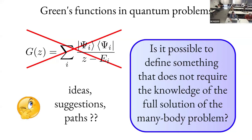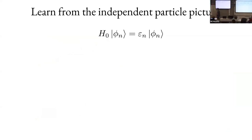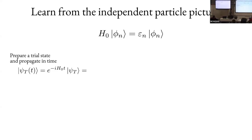The suggestion is to go to the single-particle case, which is always good because we know how to solve it. In the independent-particle picture, the Hamiltonian is factorizable, we have products of wavefunctions, and we have the eigenvalues — a problem we know how to solve. So, what would the Green's function be in this case? Let's imagine we create a trial state in this independent-particle picture.